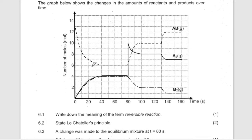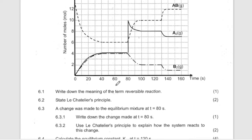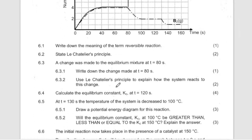They are asking: write down the meaning of reversible reaction. What does it mean? A reversible reaction means reactants can be converted to products and products can be converted back to reactants — so the reactants and products can be converted in both directions. State Le Chatelier's Principle.